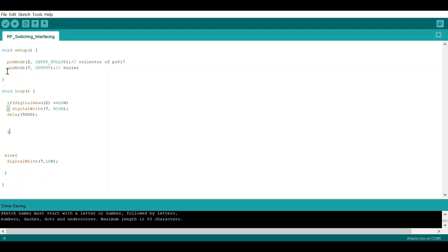The code for this is really simple. An internal pull-up resistor is used on pin number 2 with the INPUT_PULLUP command, and pin number 7 is made into an output. So basically, when the button is pressed, pin number 2 is grounded, causing it to go low. This causes the buzzer to turn on for 5 seconds and then turn back off.